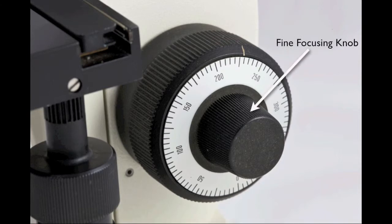The smaller knurled ring is the fine focusing knob. Turning this will move the stage in small increments. In this way, you can tweak the focus in small amounts until the object of interest is at its clearest.